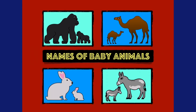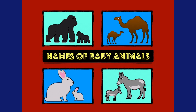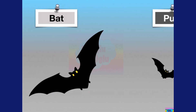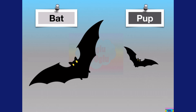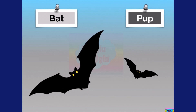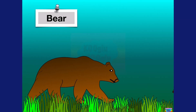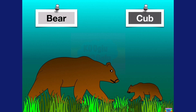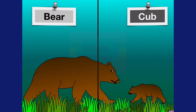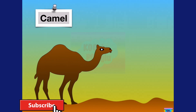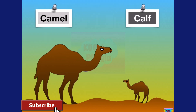Hey guys, today we're going to learn the names of baby animals. Check the link in the description for other videos about animals. Here we got a bat, and a bat's baby is called a pup. A bear baby is called a cub.